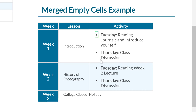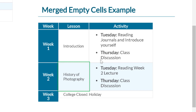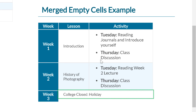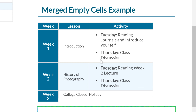Continuing: Activity — Thursday — Class discussion. Then Week 2 — Lesson: History of Photography. Again, it reads the column header and then what it is about. Activity — Tuesday — Reading week 2 lecture. Activity — Thursday — Class discussion. Then Week 3 — Lesson: College closed, holiday. It tells us the lesson header and then that the day is closed because it's a holiday.